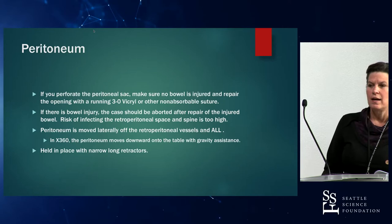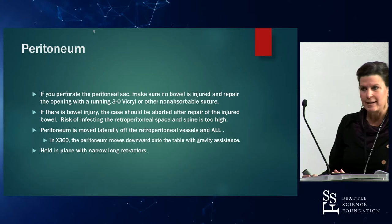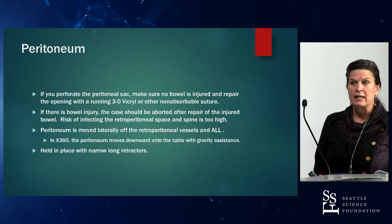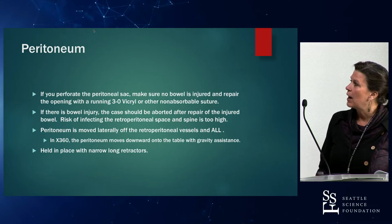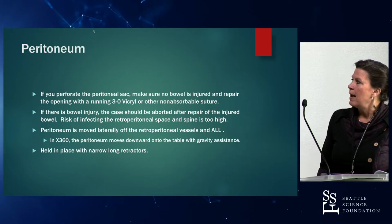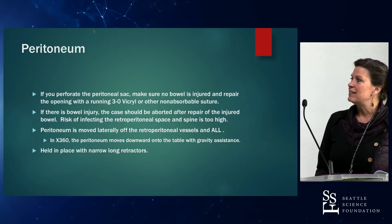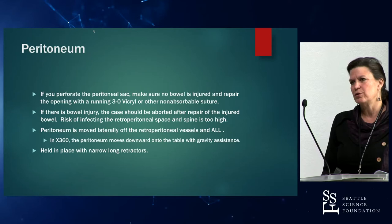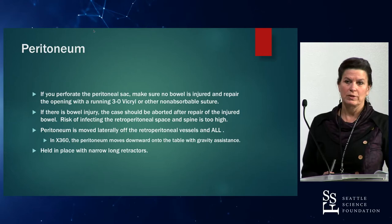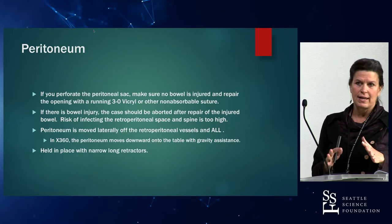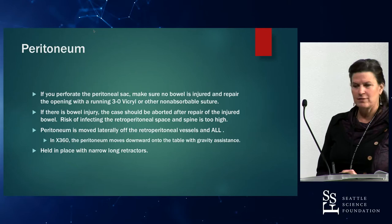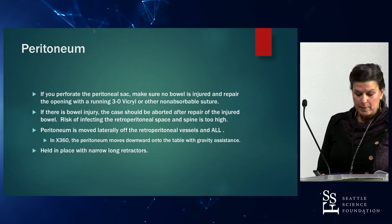Eventually you get down to the peritoneum, and one of our nemeses is that we really don't want to get into it. But if that happens, you can easily repair the peritoneum with a running 3-0 absorbable suture. If by chance there is an actual bowel injury, you need to think carefully before proceeding with the operation, because the last thing you want to do is infect the retroperitoneum or the spine with colon flora. I have never had a bowel injury going in on a case and so have not had to truncate a case because of that.